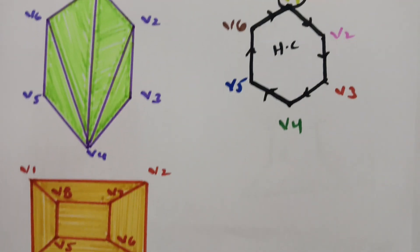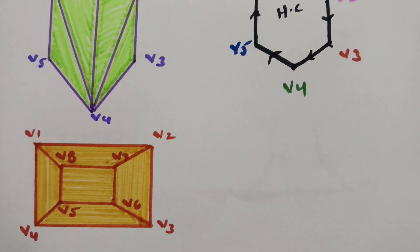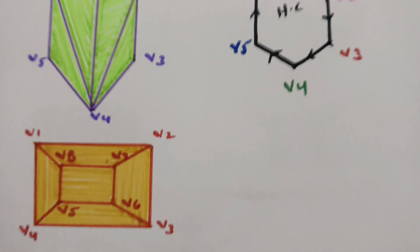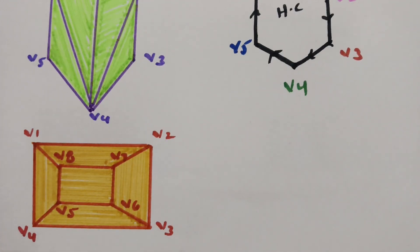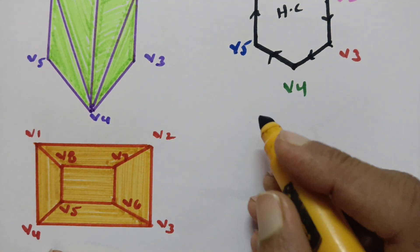The next example has eight vertices. There are eight vertices: v1, v2, v3, v4, v5, v6, v7, and v8.